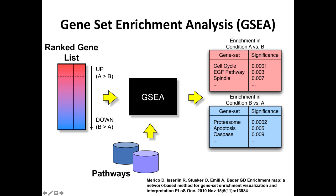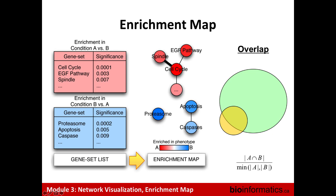We can take the GSEA example we learned about — GSEA gives us pathways enriched in condition A versus B, and condition B versus A. We frequently think about this as upregulated and downregulated. Keep in mind it doesn't mean the pathway is actually activated — it means the pathway is enriched in the upregulated genes, which could be negative regulators of the pathway. For GSEA, we can take the significance and color the nodes two different colors — red and blue for up and down — and the overlap is computed using a set overlap statistic.